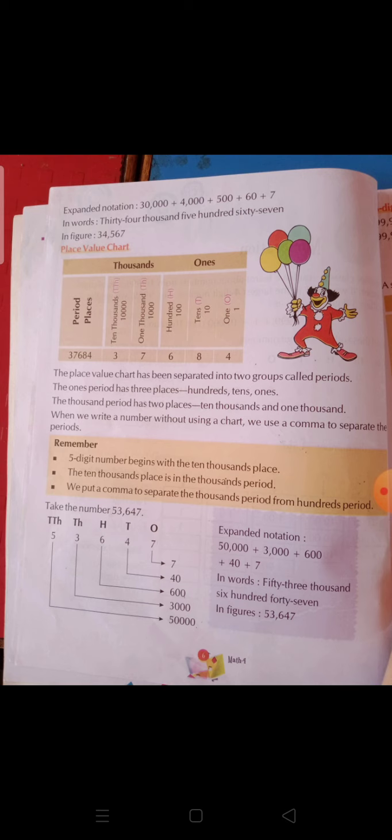In figures, we write 53,647. We are talking about two periods here: the ones period and the thousands period. In the ones period we have ones, tens, and hundreds. We are talking about the number 53,647.